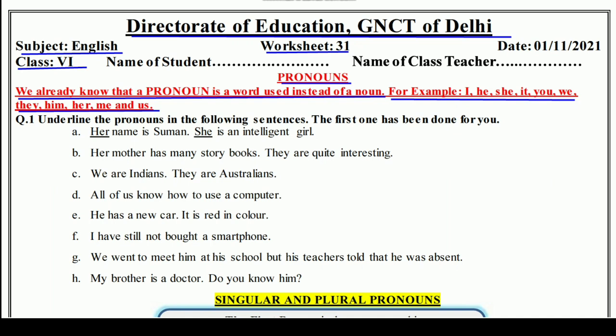Question number one is: underline the pronouns in the following sentences. The first one has been done for you. The first sentence tells us: her name is Suman — she is an intelligent girl. So 'her' and 'she' are pronouns here.